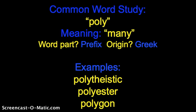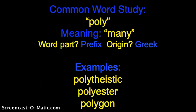Some examples of words that contain the prefix poly would be polytheistic. In our last word study, we had monotheistic. Monotheistic means you worship one god. Polytheistic means you worship multiple gods, or more than one, sometimes many gods. When you study the cultures of the Greeks and the Romans, in ancient Rome and ancient Greece, you will find out that those cultures were polytheistic.